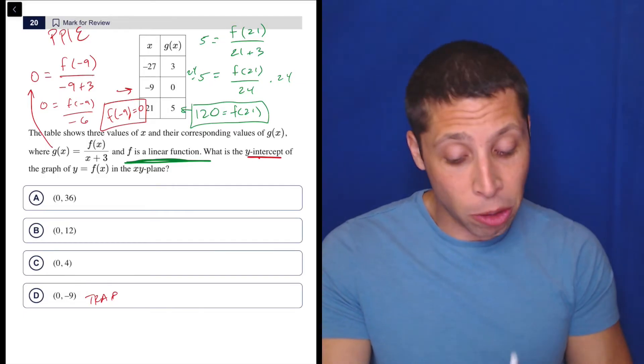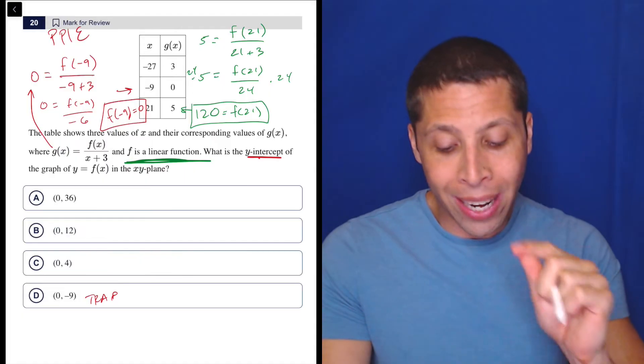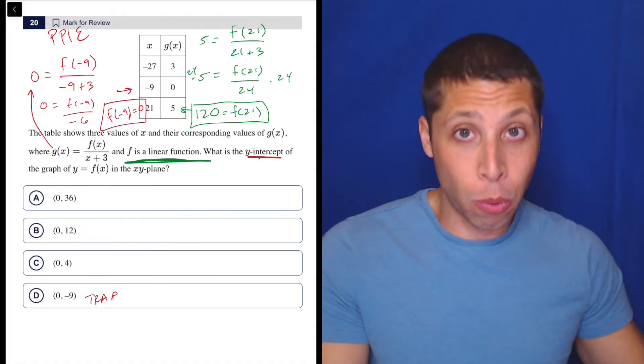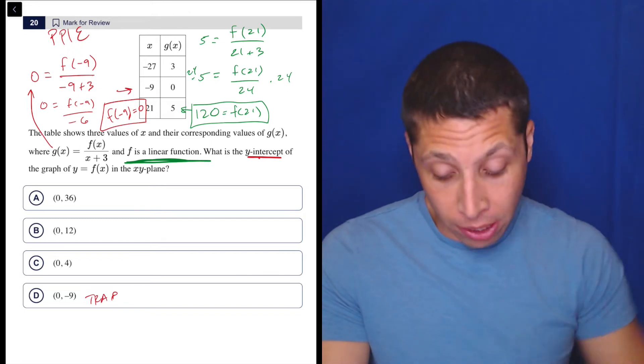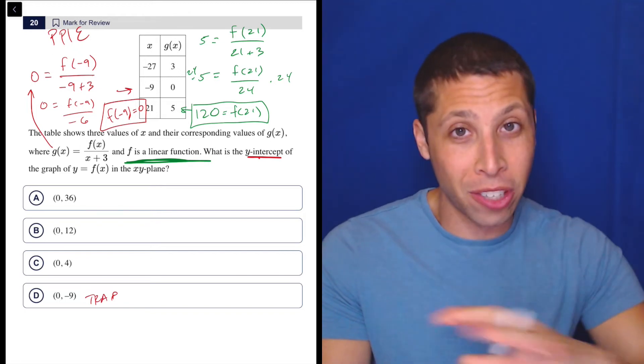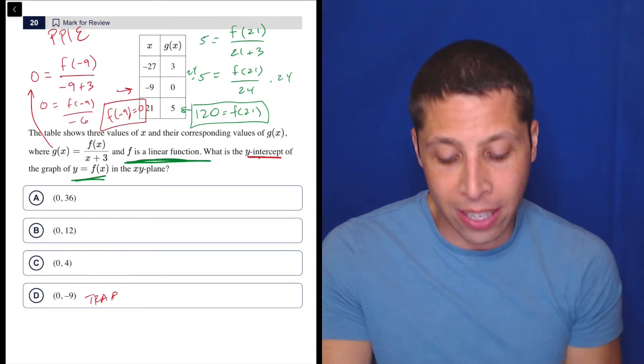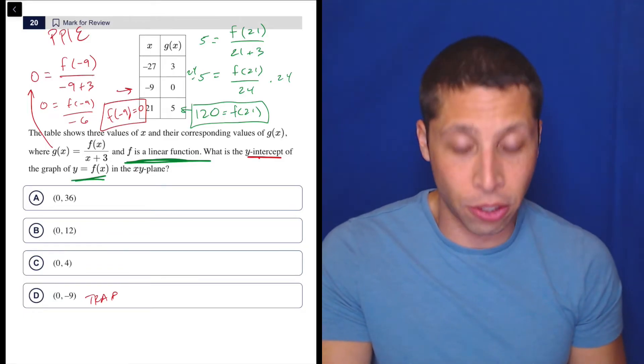They're written in function notation, but these are x and y coordinates. When x is negative nine, y is zero. When x is 21, y is 120 on the f graph. Because we're not interested in the g graph anymore. That's just kind of a step we've got to go through to get to f. So we're interested in the f, and we're looking for its y-intercept.